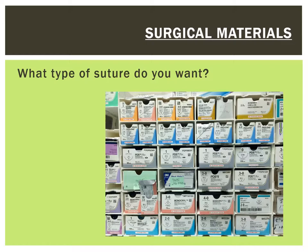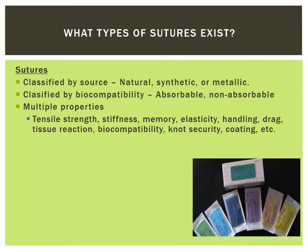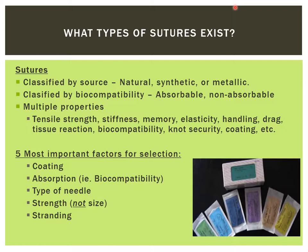There are five questions you should ask yourself when selecting a suture. First, it is important to understand how we classify sutures, which is usually done by their source or biocompatibility. Their source can be natural, synthetic, or metallic, but this often does not correspond to their biocompatibility, which is much more important, meaning that sutures can either be absorbable or non-absorbable. The five most important factors to consider are the coating, the absorption, the type of needle, the strength, and the stranding. Note that size is not as important as strength.